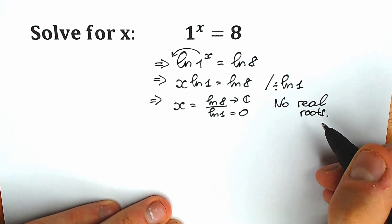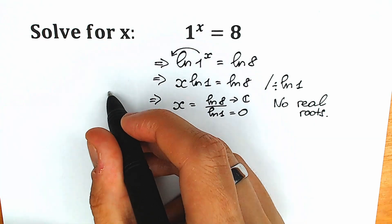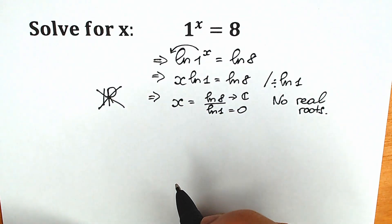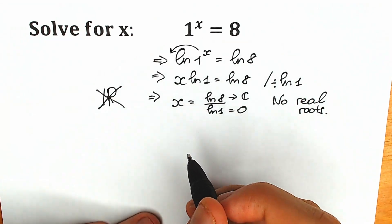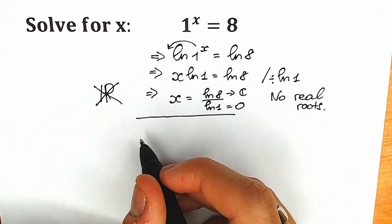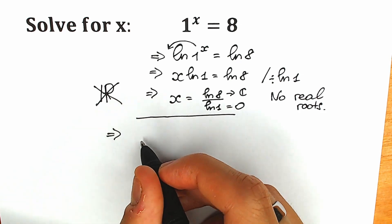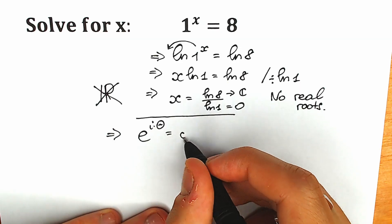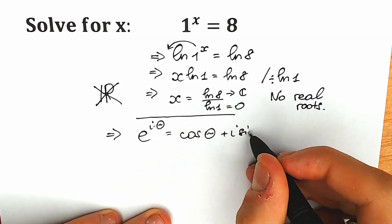When we don't have real roots, maybe we have complex roots. We can reject the real number roots. Now let me show you my approach for finding complex roots. I'm going to introduce Euler's identity, which looks like this: e to the power i times theta equals cosine theta plus i sine theta.